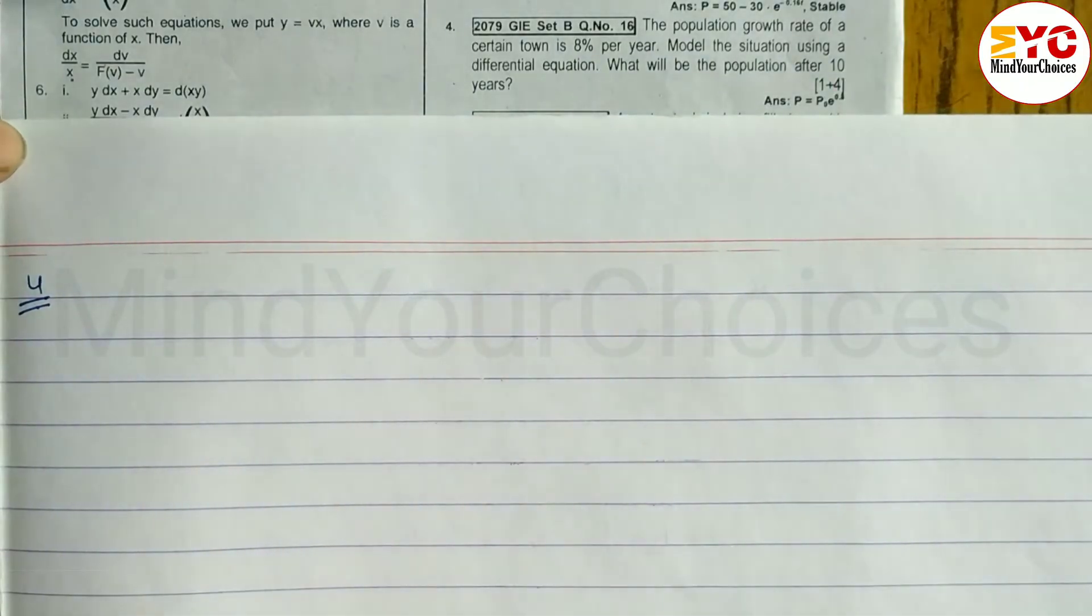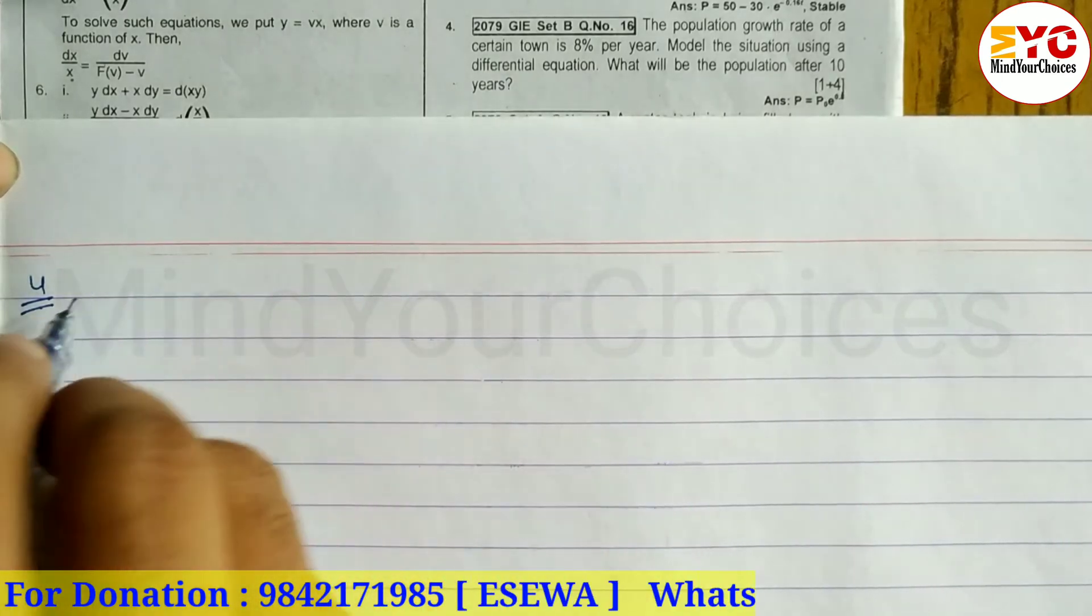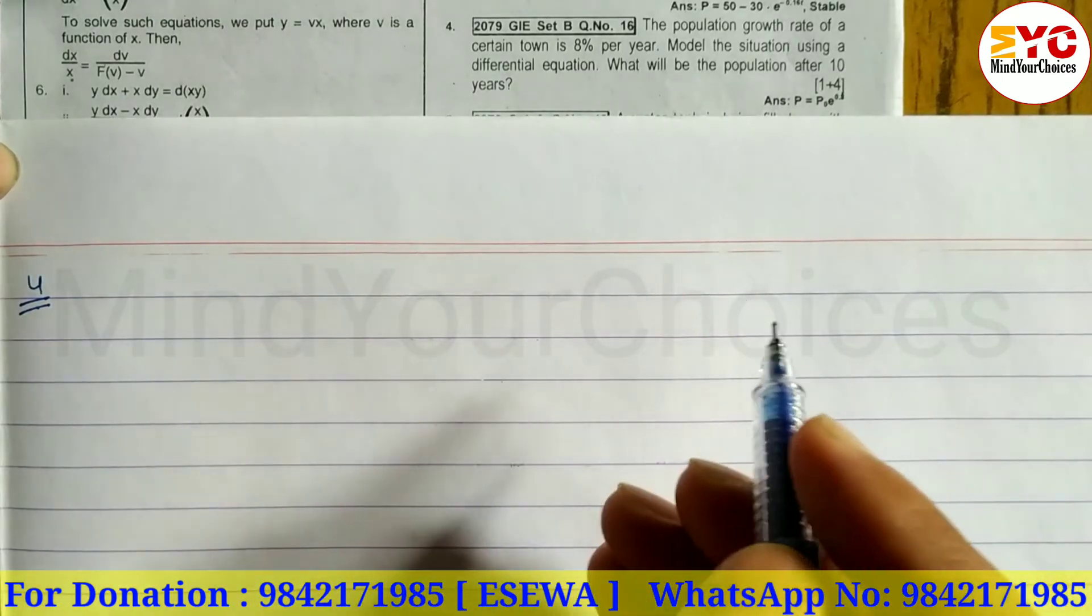What will be the population after 10 years? So first of all we have to let initial population P0 or P naught we can write, and P is the population after T years.